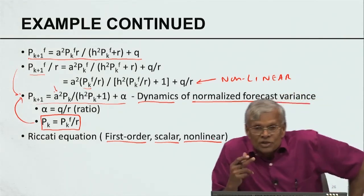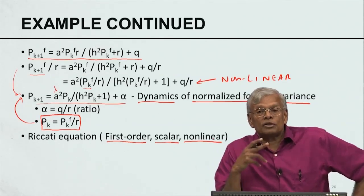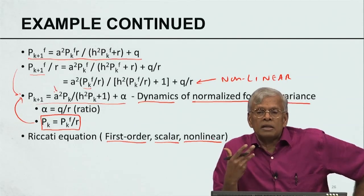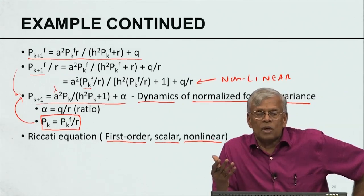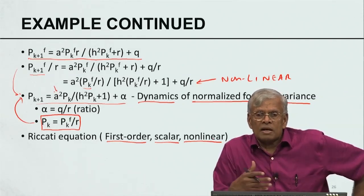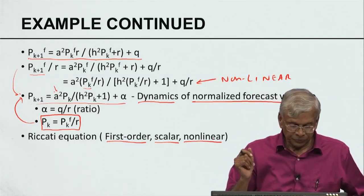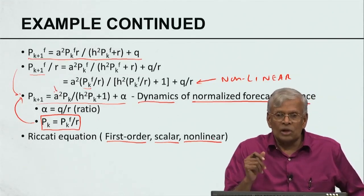This type of recurrence relation — a first-order, scalar, nonlinear recurrence where p_{K+1} depends on p_K, with p_K appearing in both numerator and denominator — has come to be called the Riccati equation in the theory of difference equations. It is first order because K+1 depends on K, it is scalar because we are concerned only with variances, and it is nonlinear because of the structure on the right-hand side. It is due to Riccati, an Italian mathematician. There is a Riccati equation in both ordinary differential equations and difference equations; here we are concerned with the difference equation analog.